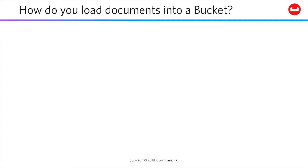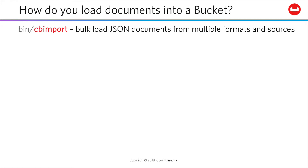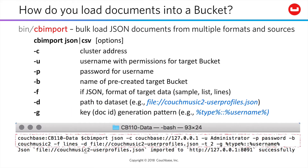Loading a bucket is similarly easy. Couchbase Server has released a powerful new data import tool, CBimport. It supports multi-threaded import of either JSON or CSV data from multiple different source formats. It also supports custom key generation, allowing you to define the ID to be assigned to each document by pattern, including data extracted from each document. You'll walk through creating and loading a bucket from a set of JSON documents in the lab ahead. Creative folks might play around with CSV or JSON data that you have lying about, too, once you see how all this works.